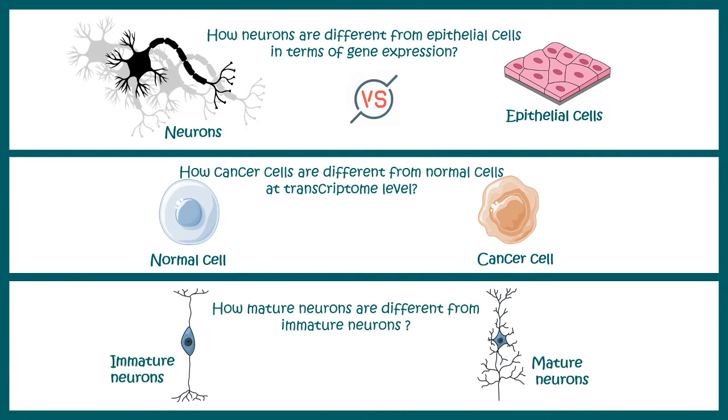Or we ask that how a mature neuron is different from an immature neuron. All of these kinds of questions can be answered using microarray by looking at the transcriptome level.